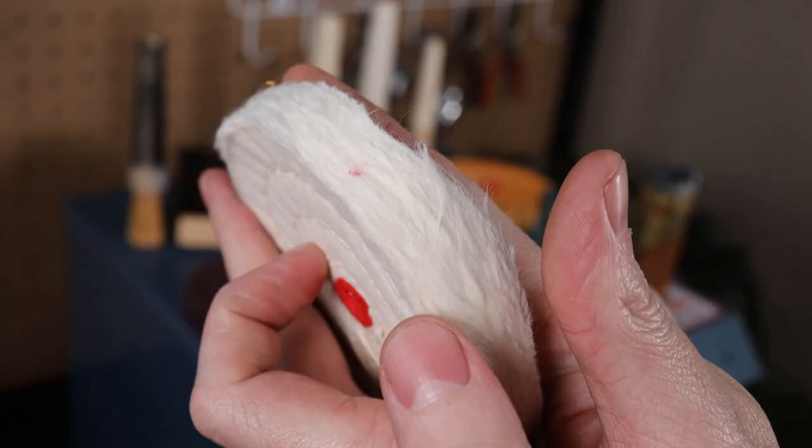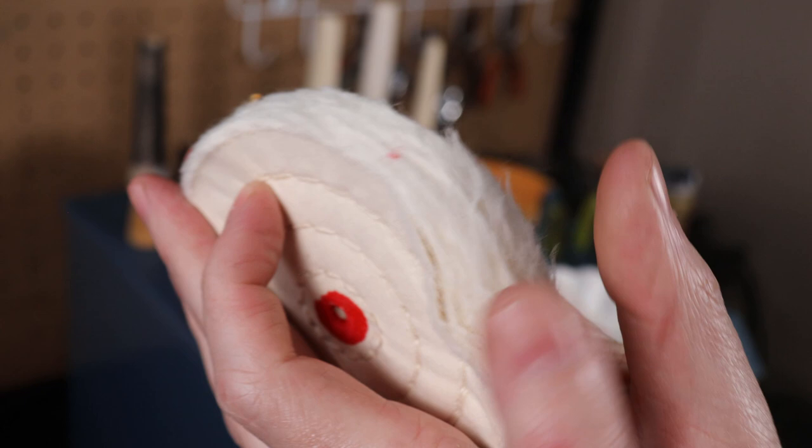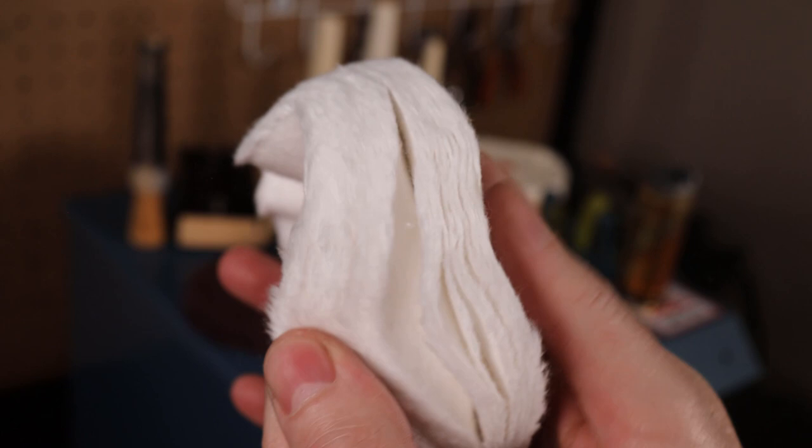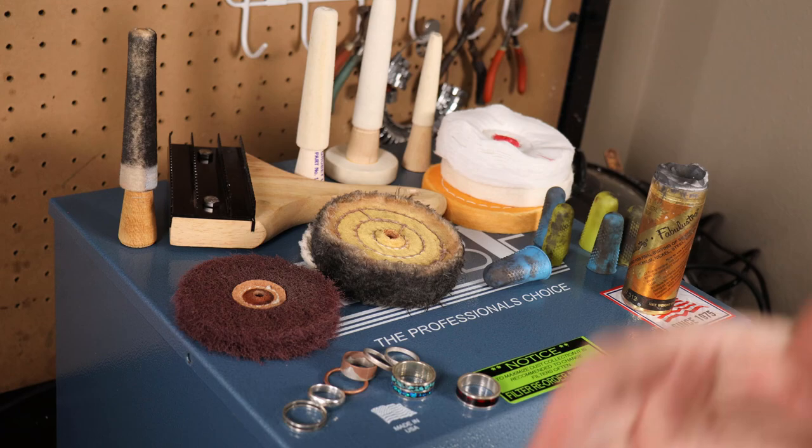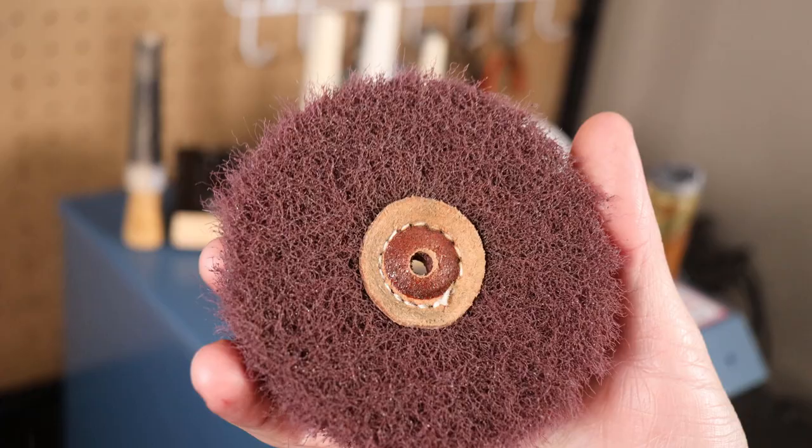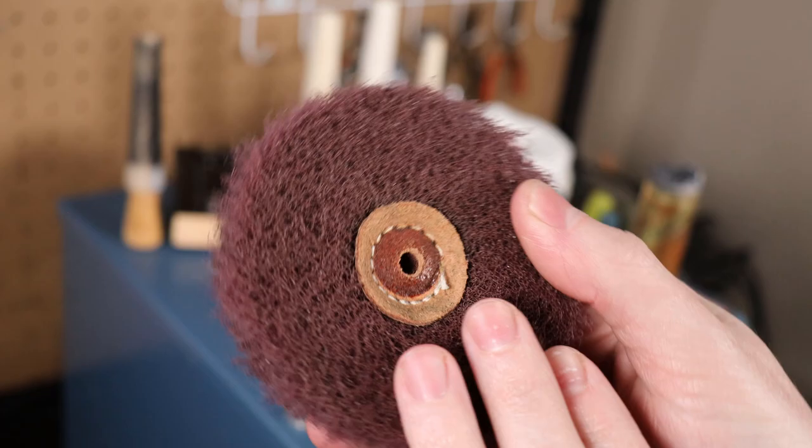You can get some like this that are very similar but this is a softer material, or you can get an extremely soft material. This is something that you have to play with and research more based on what you want to get out of your buffing. And there's even these that will give you a nice matte finish on whatever you're working on.